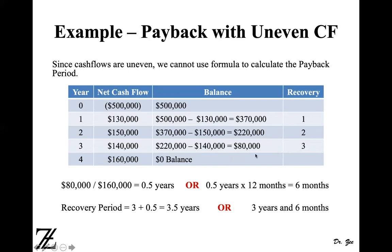To find how many additional months it takes, divide the remaining balance of $80,000 by the year 4 cash inflow of $160,000. That gives 0.5, which is 0.5 years. Since there are 12 months in a year, 0.5 times 12 equals 6 months. So the payback period is 3.5 years, or three years and six months.